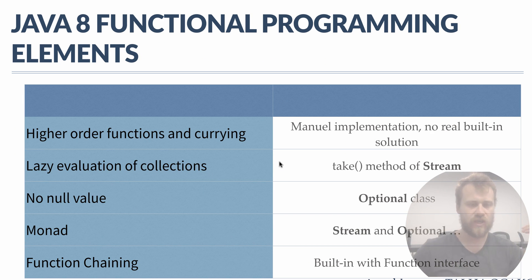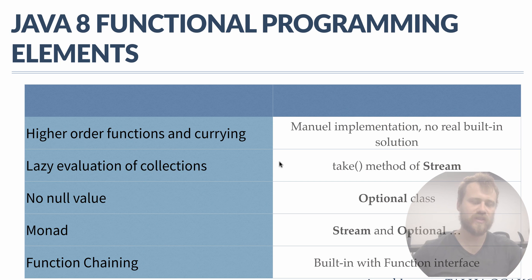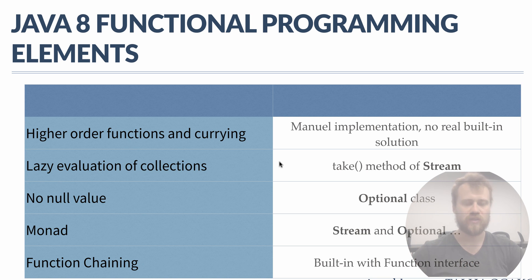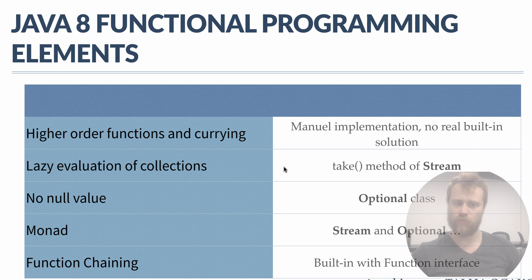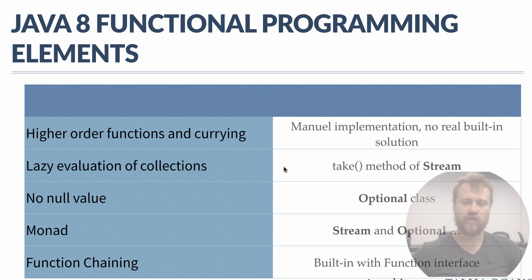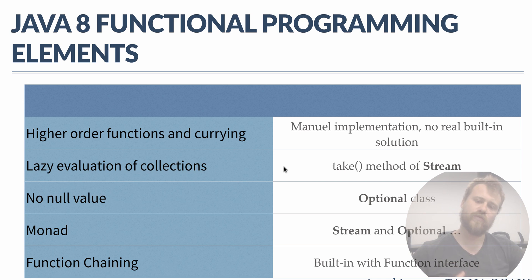The other thing is higher-order functions — returning functions as return values. There is no built-in solution in Java 8 for this, but with some manual implementation you may supply higher-order functions and currying. For lazy evaluation of collections, Java 8 again uses streams — namely the take method. For no null values, we use the Optional class, which simply stores whether it has some data or no data. For monads, we use Stream and Optional.